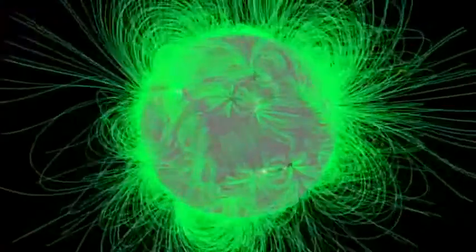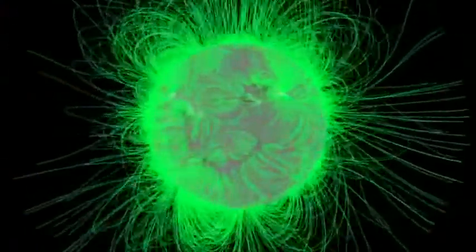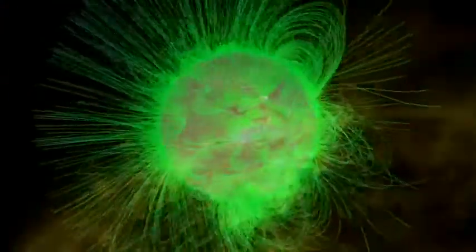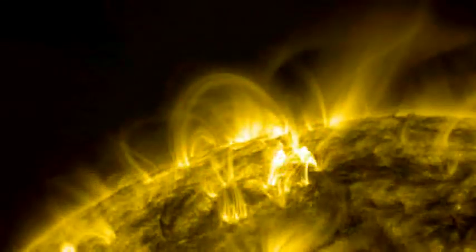While we cannot see magnetic field lines, NASA's SDO can observe solar particles that move along them, tracing out giant arcades of magnetic loops on the Sun's surface.